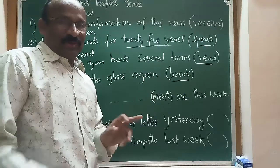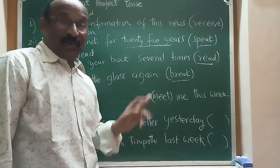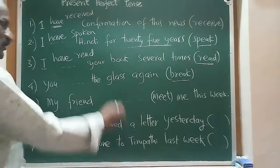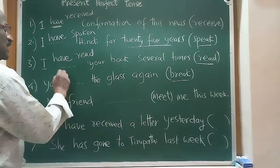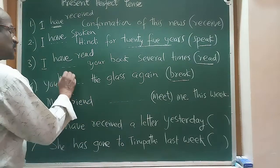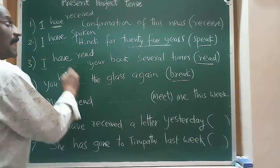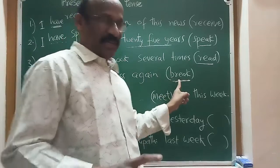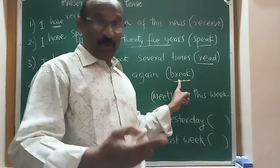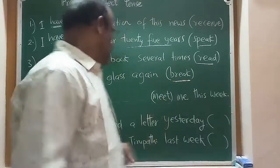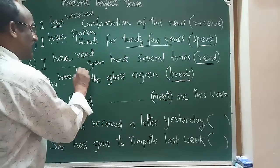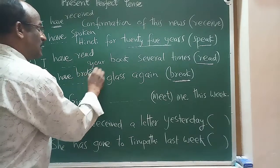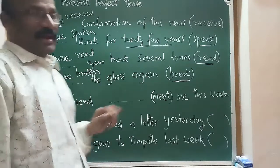Next exercise: 'You have broken the glass again.' The past participle of break is broken — break, broke, broken. The subject 'you' takes 'have,' so the answer is: 'You have broken the glass again.'